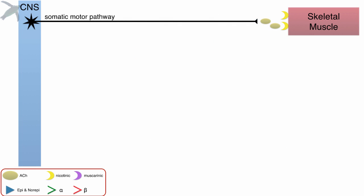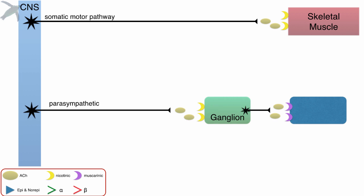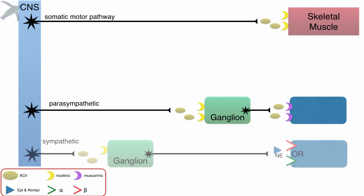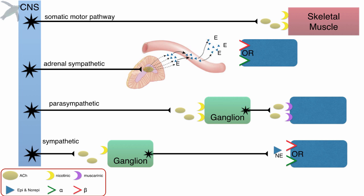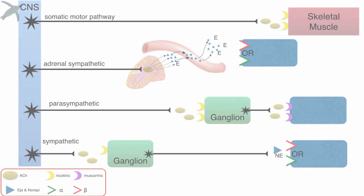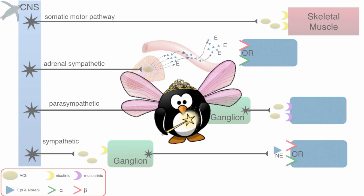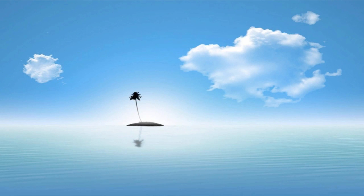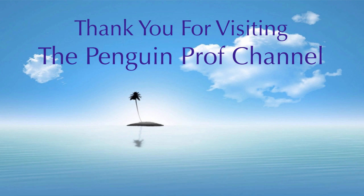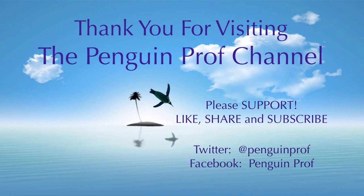So now we compare all pathways together: somatic motor, parasympathetic, sympathetic, and the adrenal sympathetic. And ladies and gentlemen, that is it — those are all the possible combinations. So if you can understand these pathways, you got it, Penguin Prof style. I hope that was helpful. Thank you so much for visiting the Penguin Prof channel. Please show your support by clicking those buttons — like, share, and subscribe. Join me on Facebook and follow on Twitter. Good luck.